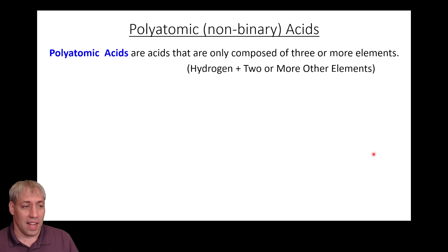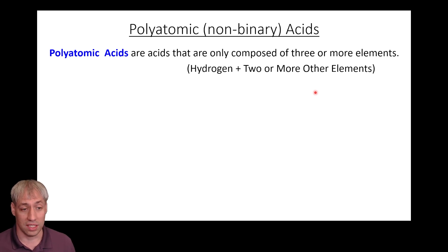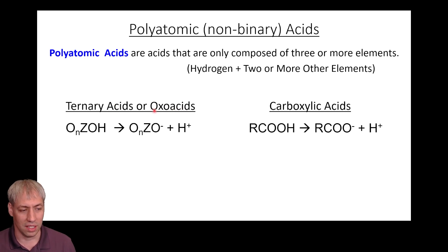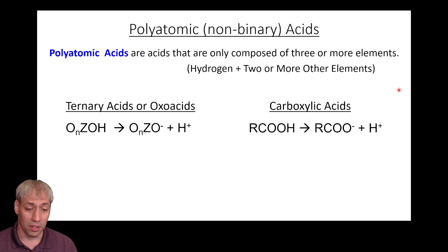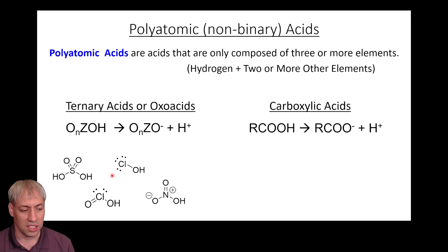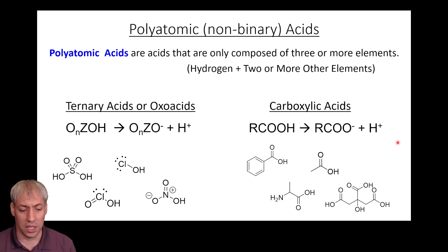Beyond binary acids, we have non-binary or polyatomic acids — more than two elements, a large class. For this course, we focus on two subclasses: ternary acids or oxoacids (oxygen plus other elements), and carboxylic acids. Carboxylic acids are very important in synthetic organic chemistry and biochemistry, showing up in COOH or CO2H groups. Oxoacids have an OH group bonded to some element with additional oxygens around it.